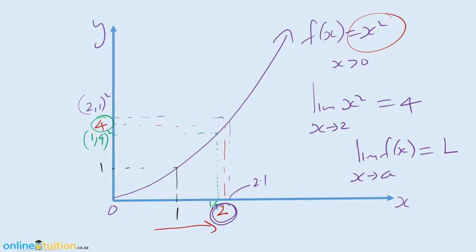We can approach from the left of 2 and from the right of 2. Mathematicians have a cute way of writing this: approaching from the left is written as a minus — a minus means from the left of a. If you look at a plus, we're approaching a from the right. So: a minus means left, a plus means right. Not plus a, not minus a — a minus for left, a plus for right.